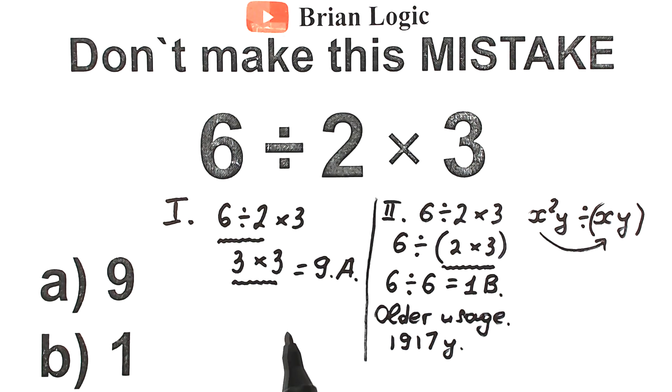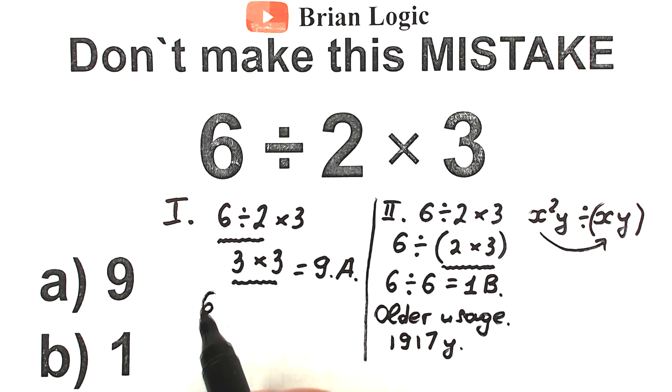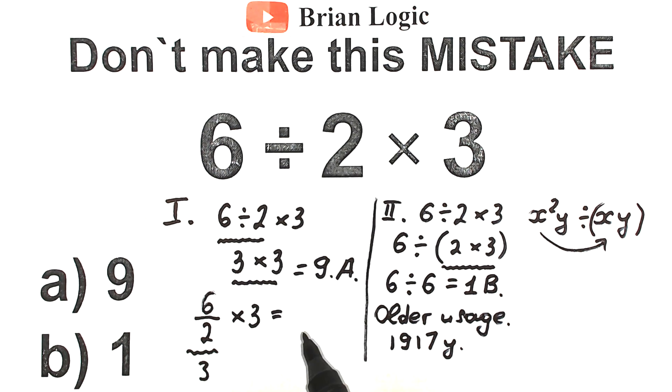And one part of students tell, okay, but let's write this 6 divided by 2 as a fraction. Okay, doesn't matter. Let's do this. So we have 6 divided by 2 as a fraction, and times 3. It changed nothing. It changed nothing for us. 6 divided by 2 equal to 3, and with this 3 times 3, this is equal to 9. So the correct answer nowadays, correct answer nowadays is option A.